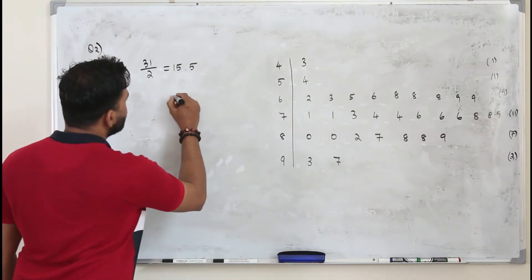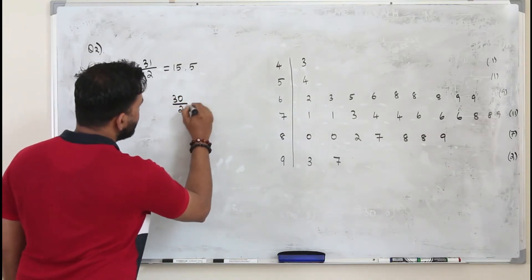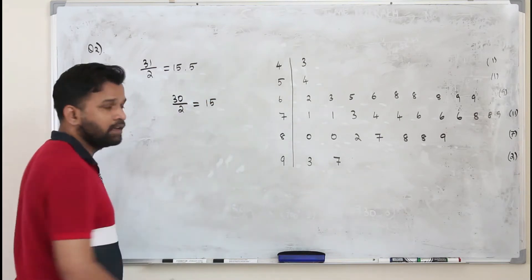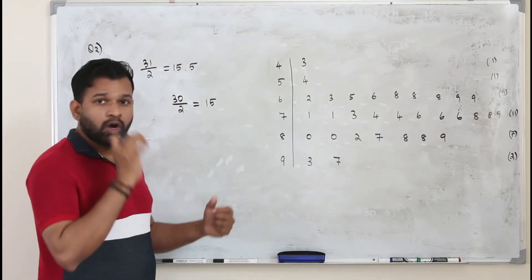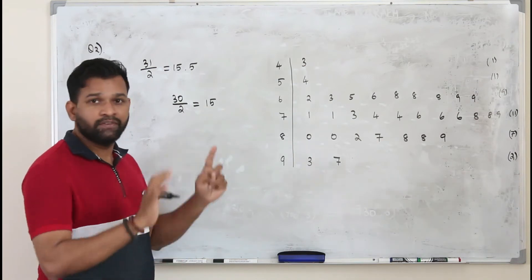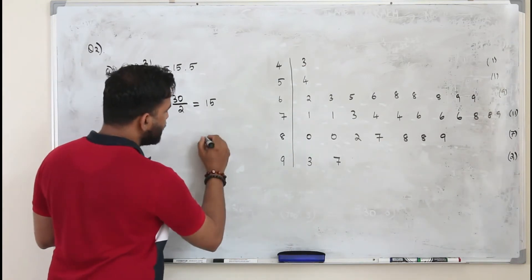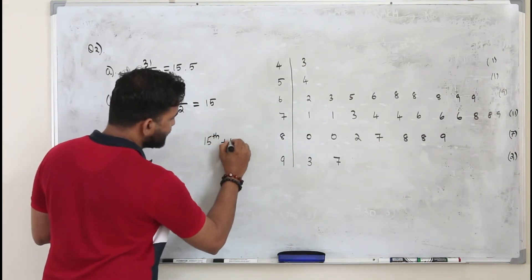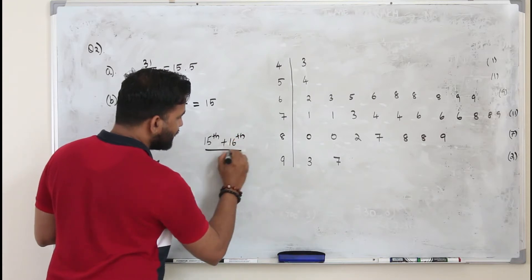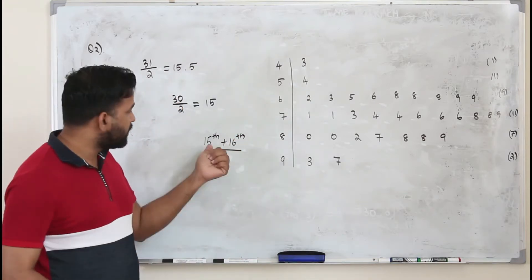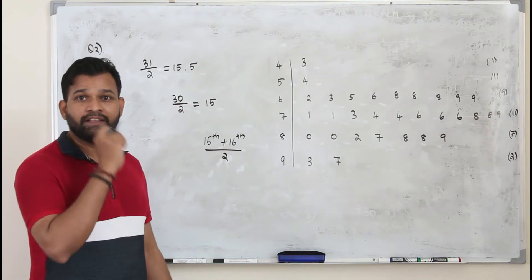Let's say you have a total number of 30 entries. When you divide by 2, you get 15. When you get a whole number, you don't take the 15th entry. You have to take the 15th entry plus 16th entry divided by 2. Average of 15th and 16th entry. That's your median.